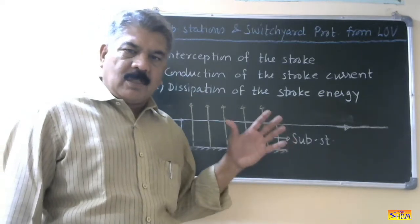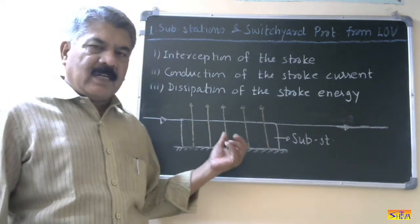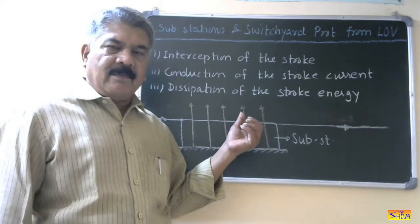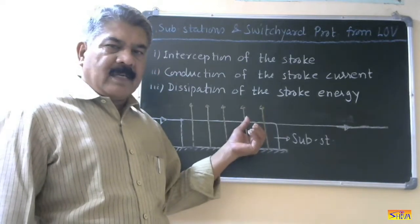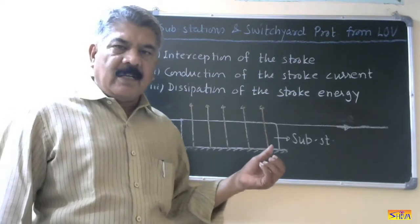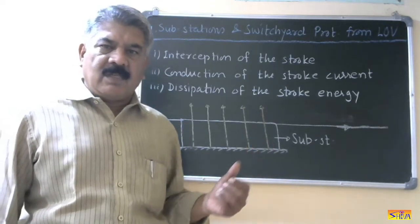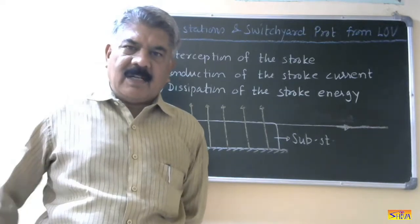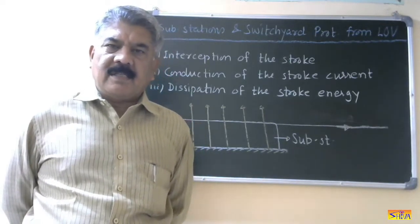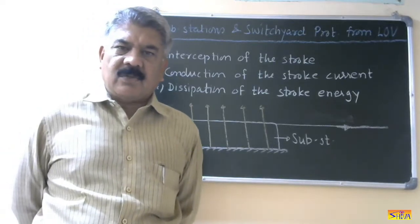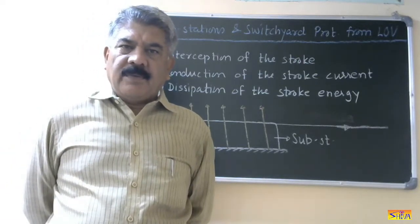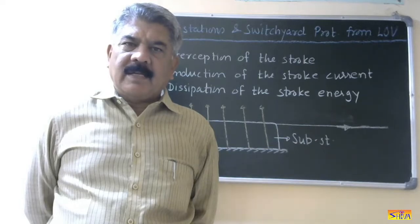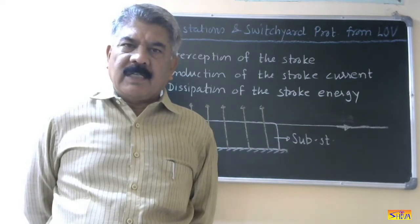So these three steps are: interception of the stroke, conduction of the stroke current, and dissipation of the stroke energy. Substations and switchyards are provided with either electrostatic shielding or tall metallic poles to attract the lightning strokes. In this way, substations and switchyards are protected against direct lightning strokes. In my next class, I will explain the protection of transmission lines and distribution lines against direct lightning strokes. If you find this lecture useful, please like it and subscribe to my channel for upcoming videos on high voltage engineering and power system protection.